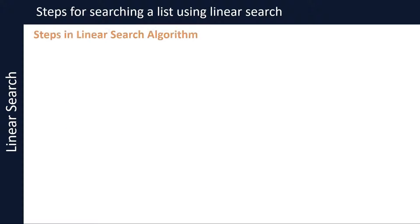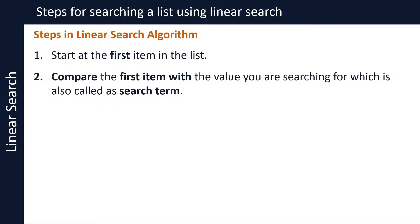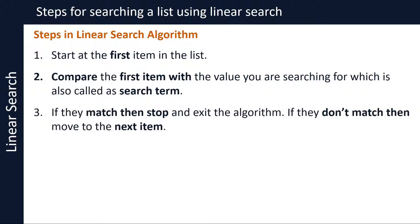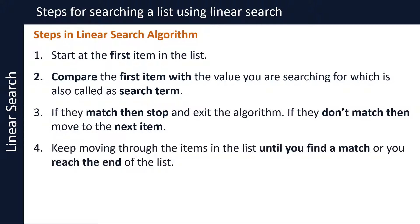The steps in the linear search algorithm are as follows. Start at the first item in the list. Compare the first item with the value you are searching for, which is also called a search term. If they match, then stop and exit the algorithm. If they don't match, then move to the next item. Keep moving through the items in the list until you find a match or you reach the end of the list.